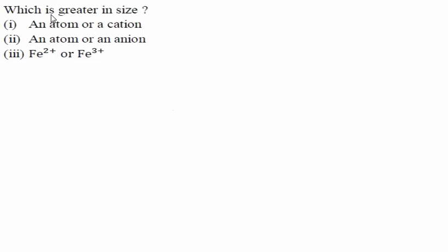Which is greater in size — an atom or a cation? I'm starting with the first part; it's pretty simple and conceptual. Take any atom — suppose X — and X has the atomic number 15, which means it has 15 protons and 15 electrons. First, let's write the electronic configuration.